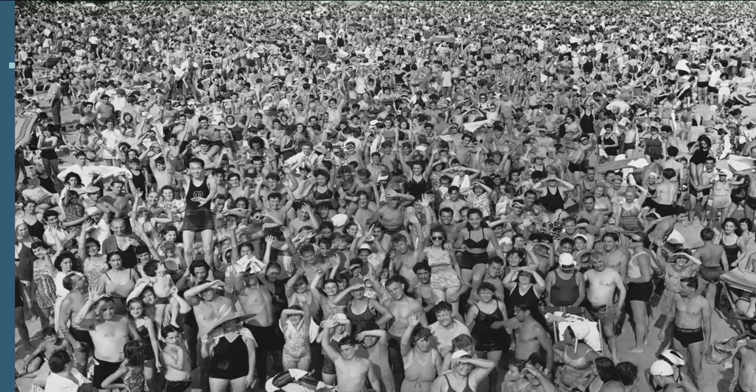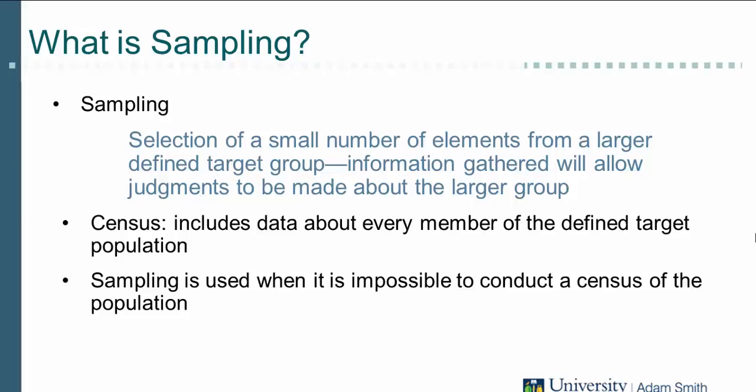Sometimes we ask entire populations. In the UK, for example, the government carries out a population census every 10 years. Population censuses are expensive, rare, and difficult to carry out. We use sampling to reduce the difficulty, amount of time, and amount of resources required to collect data.